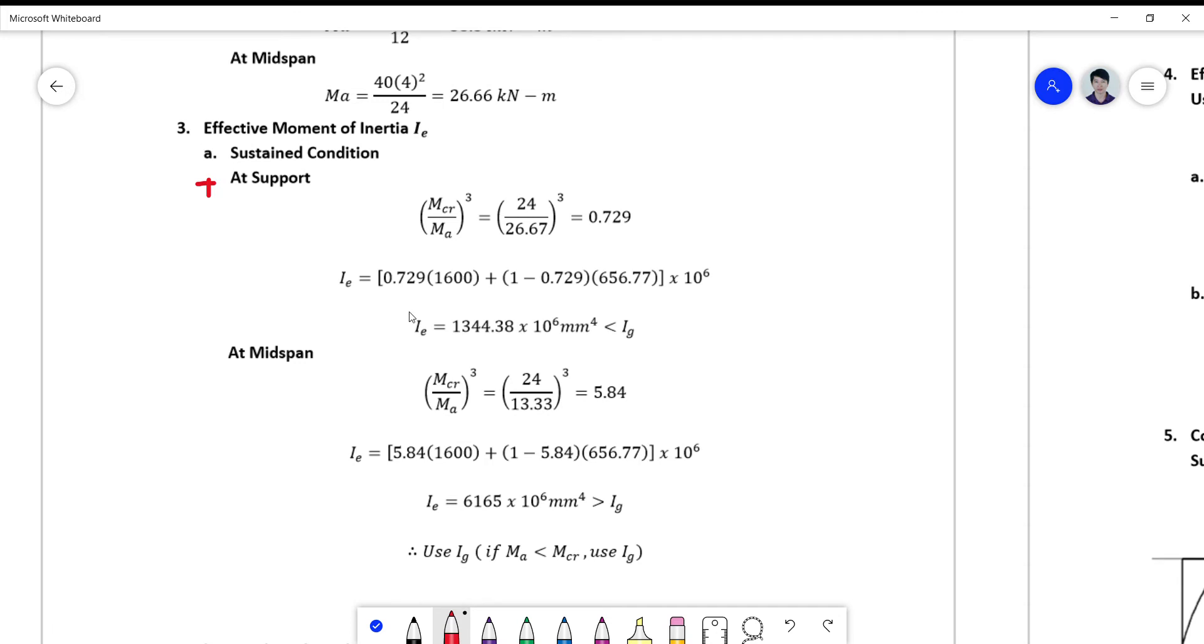The only difference is that your M applied here, your MA here, will be the moment due to sustained loads at the support, and this is the moment due to sustained loads at the midspan. That's the only difference. Of course, your ratio now, the cube, the cubical ratio, will be different from the cubical ratio here.